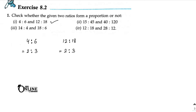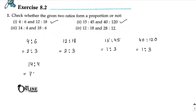Number two: 15 is to 45 — divide by 15, it's 1 is to 3. Here 40 is to 120 — divide by 40, it's also 1 is to 3. So it's also in proportion. Third one: 14 is to 4 — divide by 2, it becomes 7 is to 2. Here 18 is to 6 — divide by 6, it's 3 is to 1. Not equal, so not in proportion.